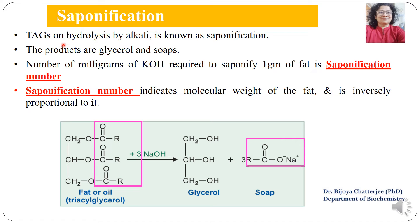Saponification: triacylglycerols on hydrolysis with alkali undergo a process known as saponification. The number of milligrams of KOH required to saponify one gram of fat is known as the saponification number. It indicates molecular weight: if more KOH is required by one gram of fatty acids, the molecular weight is lower; if a small amount of KOH is required, the molecular weight is high. Saponification number is inversely proportional to molecular weight.